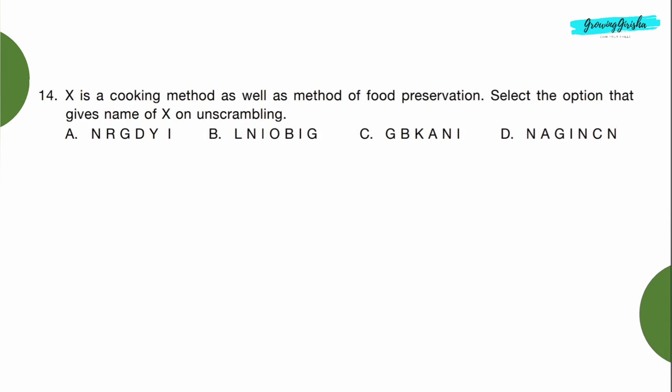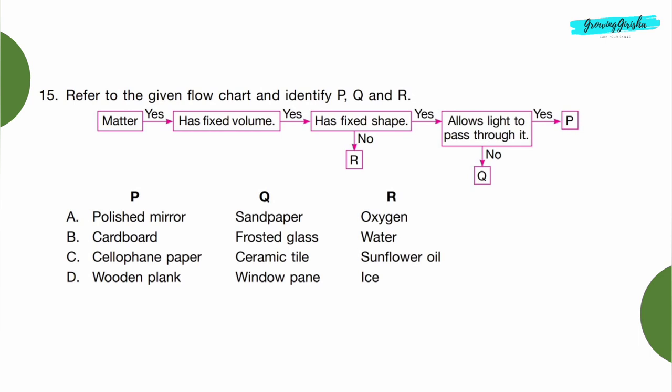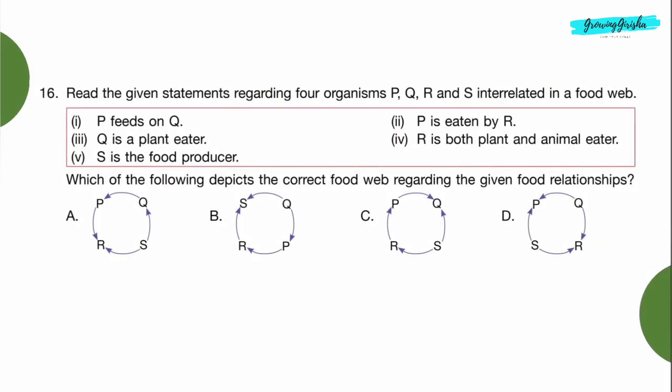When we unscramble the words we get A: drying, B: boiling, C: baking, and D: canning. Boiling is a cooking method and method of food preservation, so Option B is the correct answer. Question 15: Refer to the given flow chart and identify P, Q, and R. P is matter - yes. Options A, B, C, and D have matter. Has fixed volume - yes, all four of them has fixed volume. Has fixed shape - all of them has fixed shape. Allows light to pass through it - only cellophane paper allows light to pass through it, so Option C is the correct answer.